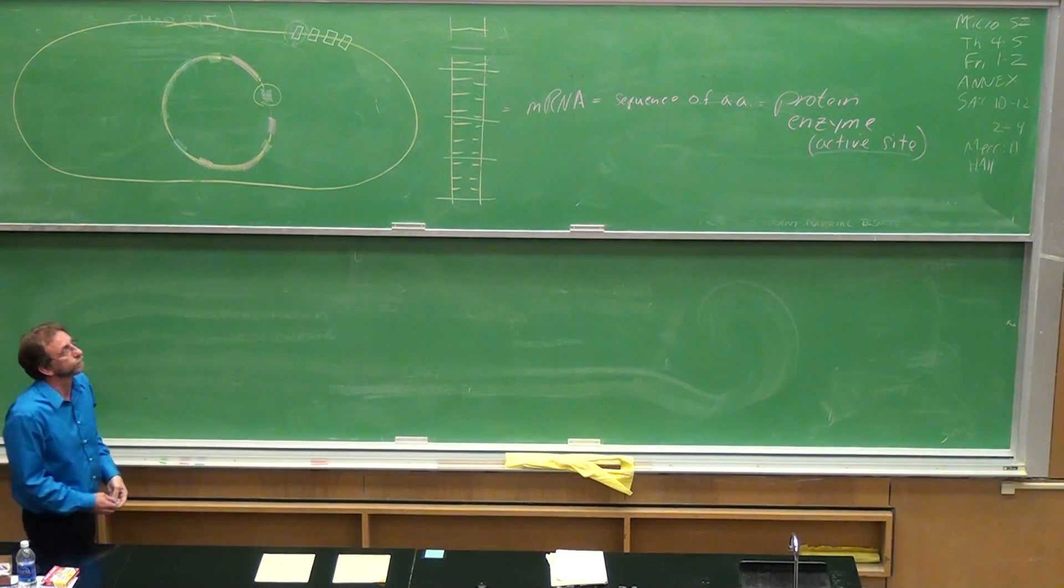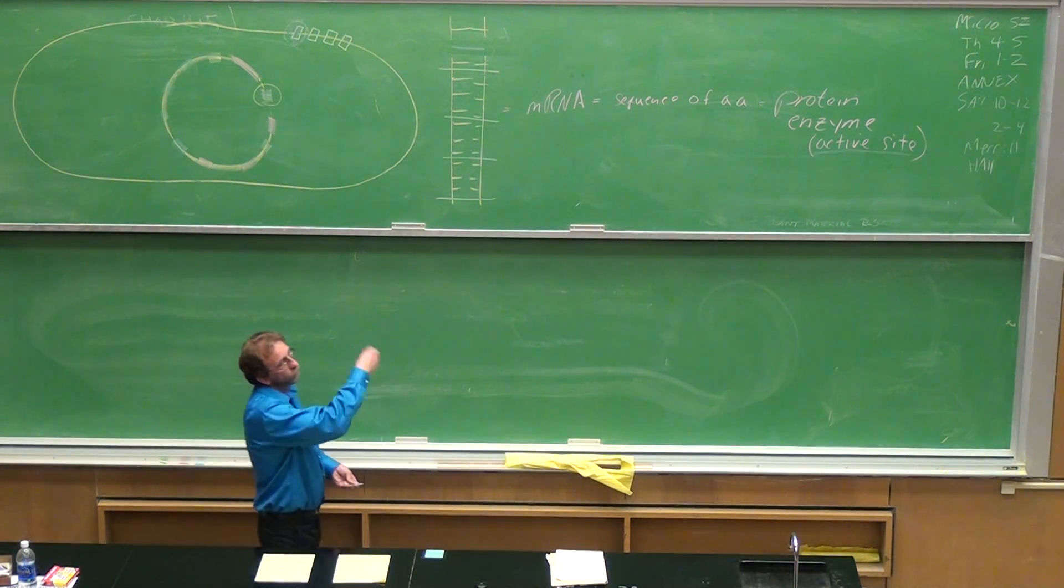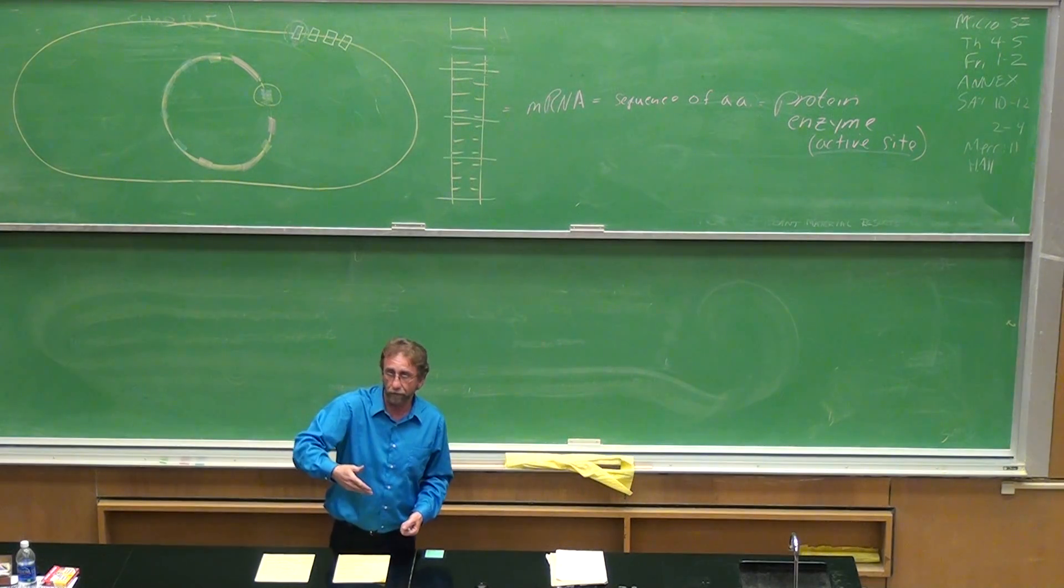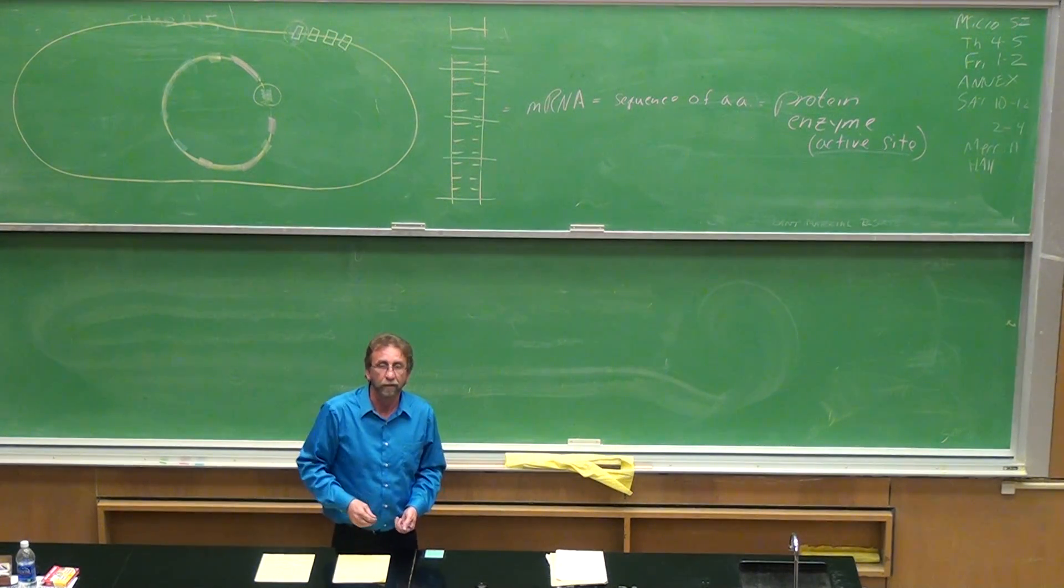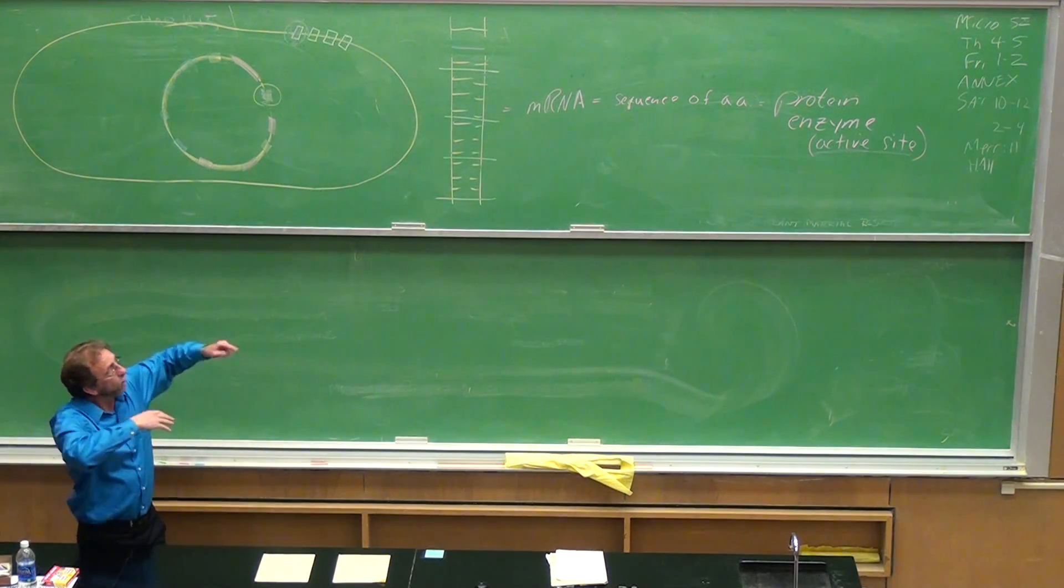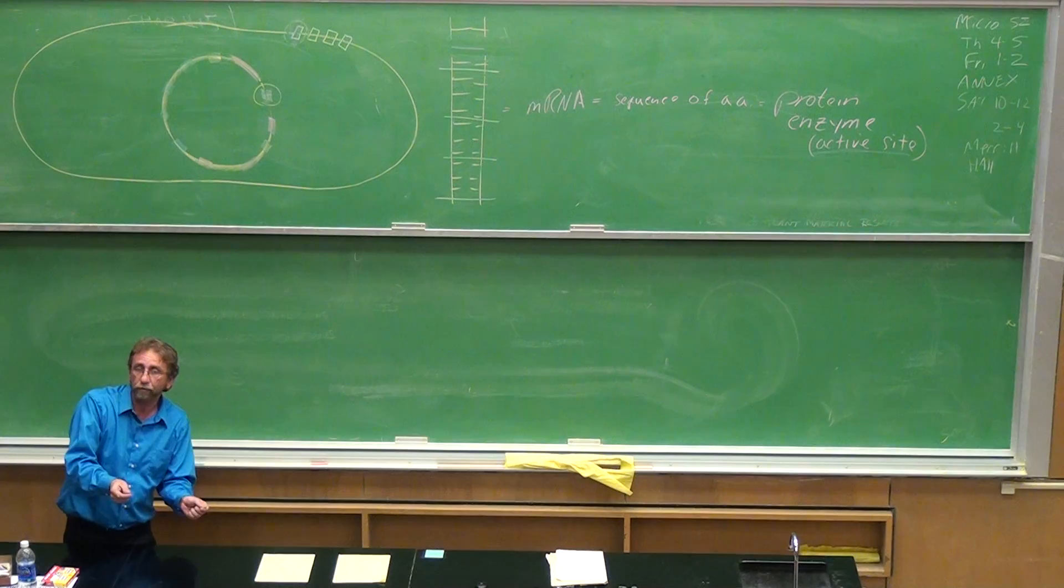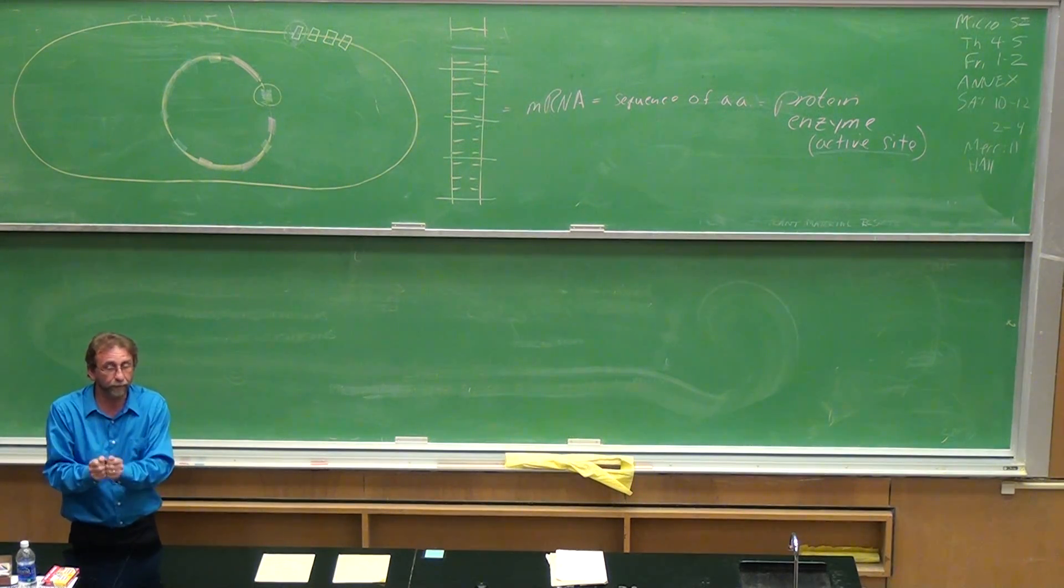Question: So the forming of the amino sequence of amino acids are proteins and enzymes? Answer: Are proteins and enzymes. Enzymes are proteins. So all amino acid sequences that fold are proteins. Some of those proteins are structural like bricks and are used for building.